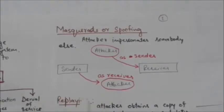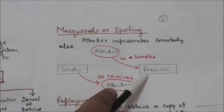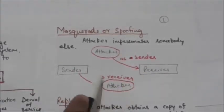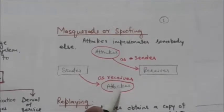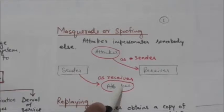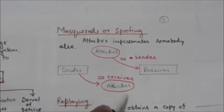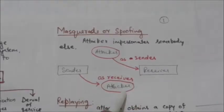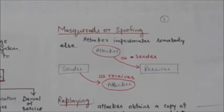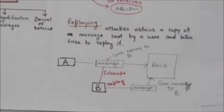Sometimes the attacker pretends instead to be the receiver entity. For example, a user tries to contact a bank, but another site pretends that it is the bank and obtains some information from the user. Such types of attacks are masquerade or spoofing.